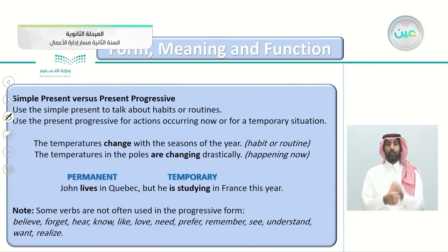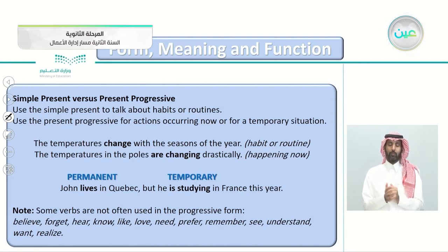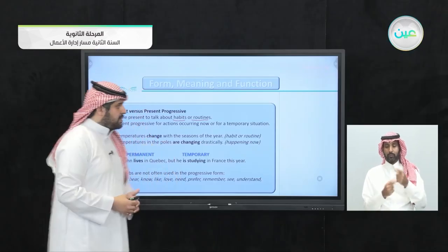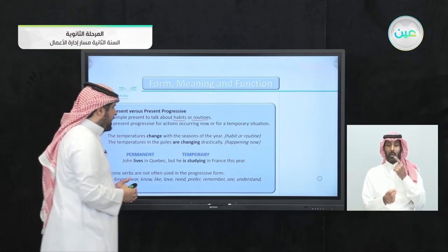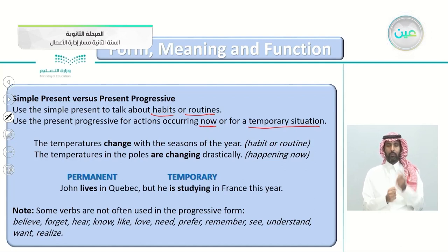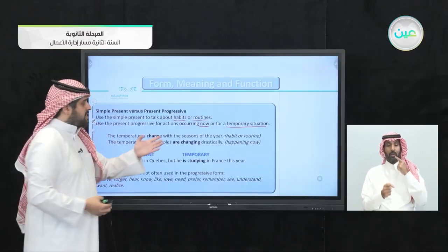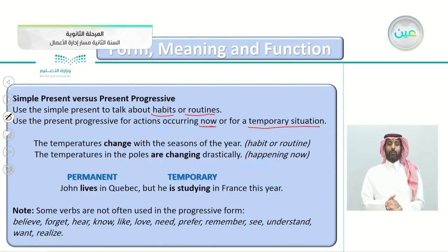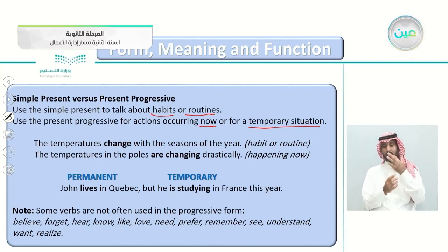We use the simple present to talk about habits or routines — things that you do every day. We use the present progressive for actions occurring now or for a temporary situation. For example, 'The temperatures change with the seasons of the year' — this is a habit or routine, so we use the simple present.